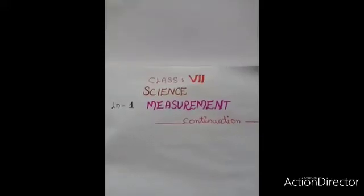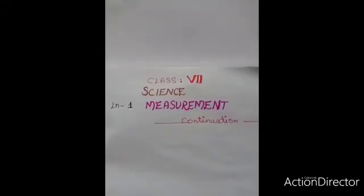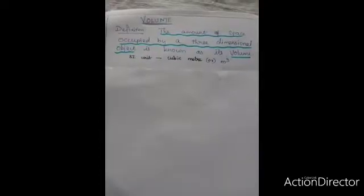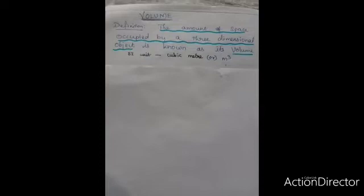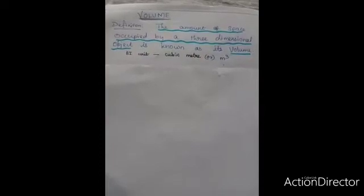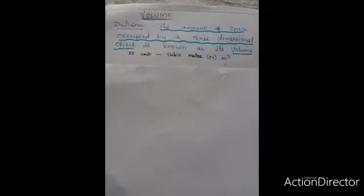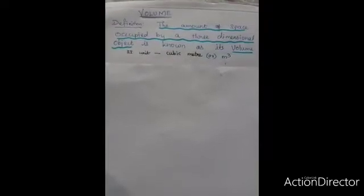Dear students, today we are going to continue the lesson measurement. In the previous class we have learnt about physical quantities and their units and how to find area of regular objects and irregular objects. Today, we are going to learn the topics volume, density and how to find distance between celestial objects.